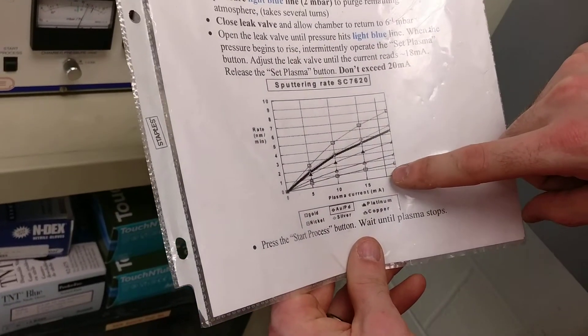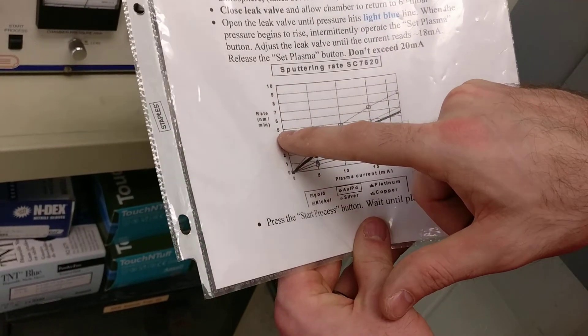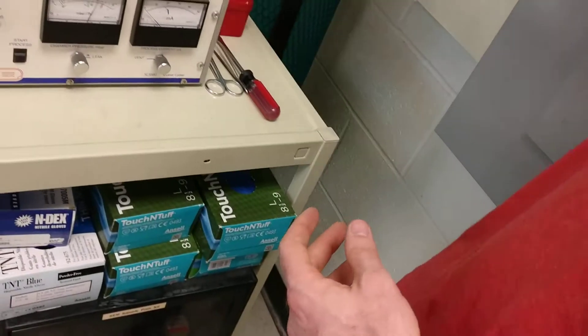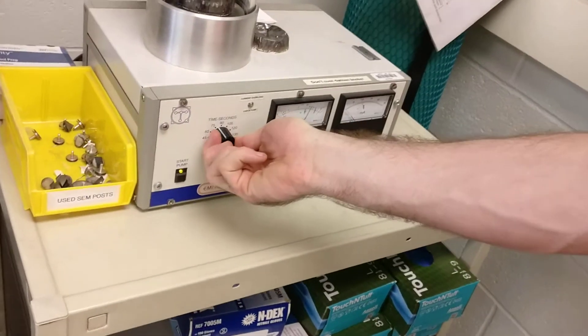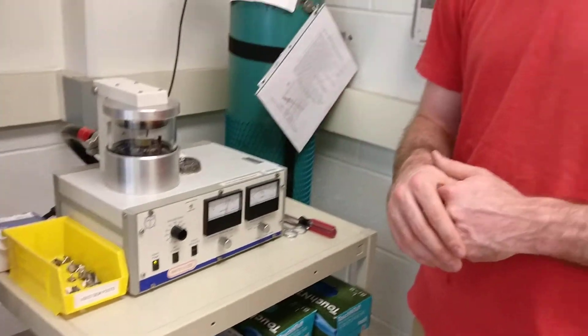We're going to set a current for 18 milliamps and that will give us a deposition rate of five nanometers per minute, and then we'll set our timer for about a minute and a half. That will give us seven and a half nanometers of coating.